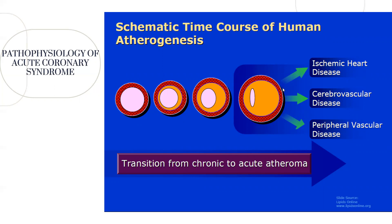Ischemic heart disease can manifest as cerebral vascular disease, where blood is not reaching the brain, or as peripheral vascular disease, where blood is not reaching the periphery of the body.